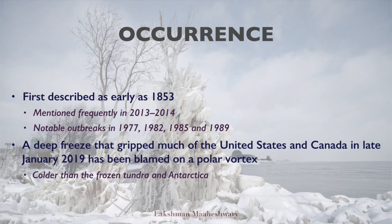The polar vortex was first described as early as 1853, but it was mentioned more frequently in news and weather media during the cold North American winters of 2013–14. There were notable outbreaks of polar vortices in 1977, 1982, 1985, and 1989. More recently, a deep freeze that gripped much of the US and Canada in late January 2019 was blamed on a polar vortex, with parts of the US experiencing wind chills just above minus 45 degrees Celsius — colder than the frozen tundra and Antarctica.